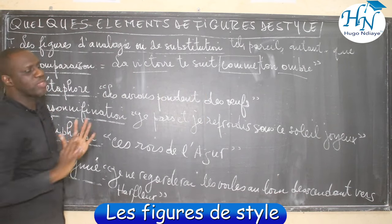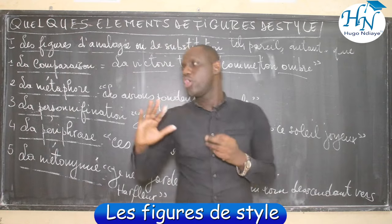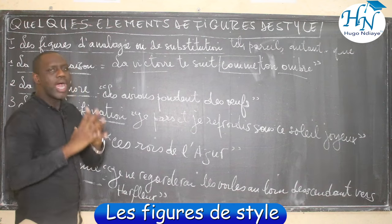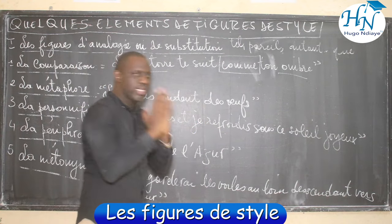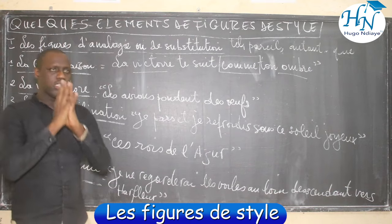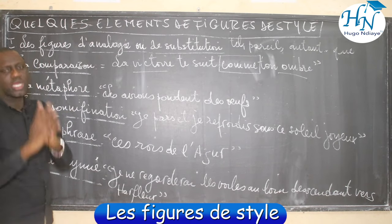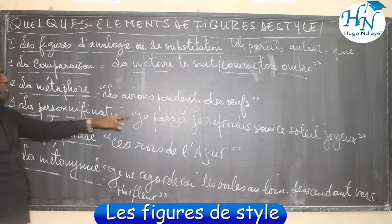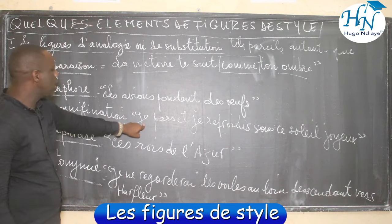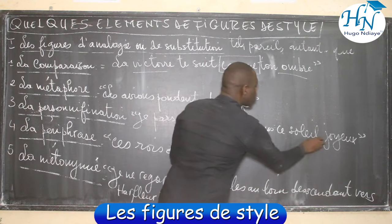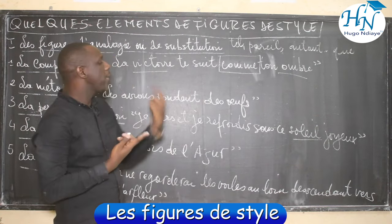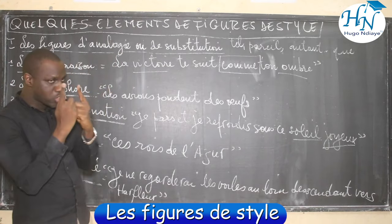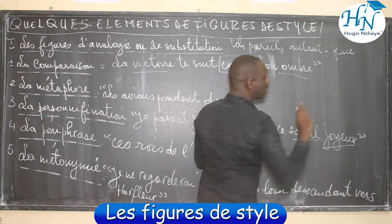Troisièmement, nous avons la personnification. Dans personnification, nous avons le mot personne. Cette figure consiste à attribuer les caractéristiques de l'être humain à un animal ou à une chose. Qu'est-ce que dit Victor Hugo ? Il dit : « je pars et je me réchauffe sous ce soleil joyeux. » Le soleil c'est la chose, mais la joie est attribuée à l'être humain. Donc nous avons ce qu'on appelle la personnification.